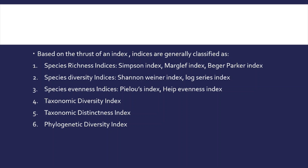Number four is the Taxonomic Diversity Index, number five is the Taxonomic Distinctness Index, and number six is the Phylogenetic Diversity Index.